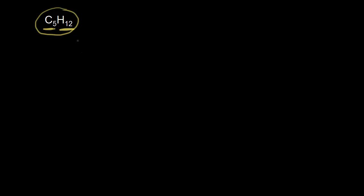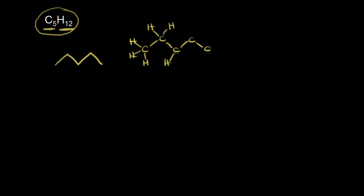We need five carbons, so for our first isomer, we could just draw five carbons in a chain. Here are my five carbons in a chain. Let's draw out those five carbons and double check that we have the correct number of hydrogens. The carbon on the far left has three hydrogens, the next carbon has two, same with the next carbon, two for the next, and finally three hydrogens for the last carbon.